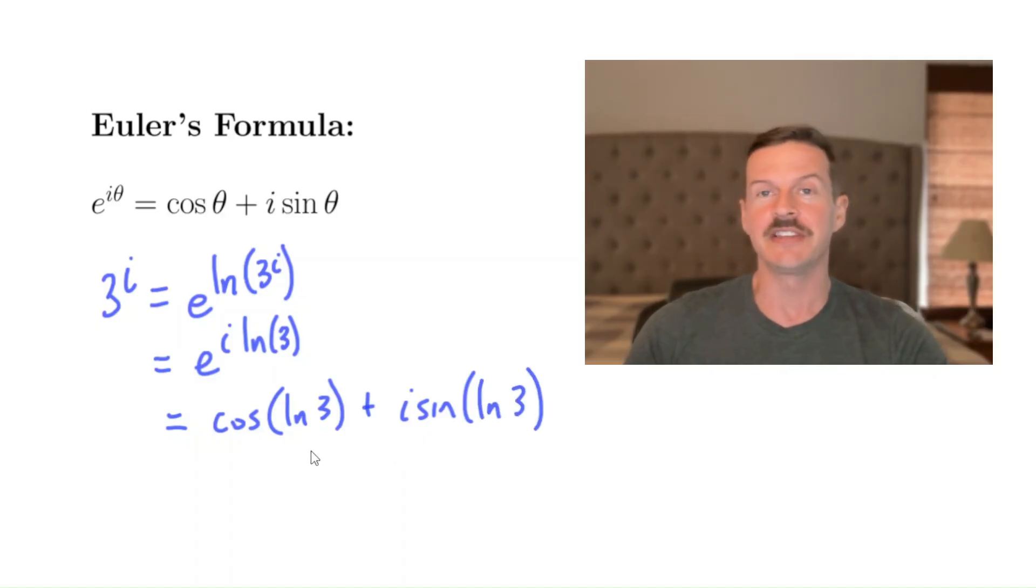Okay, and I actually did this ahead of time. I did this on a calculator ahead of time. And this is approximately 0.45, so rounded to the nearest hundredth here, plus 0.89 i. Okay, so that's what three to the i is, right? It's this complex number.